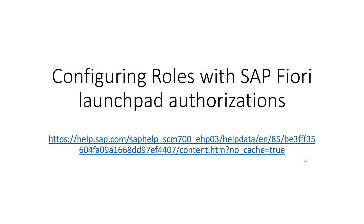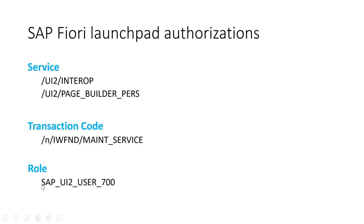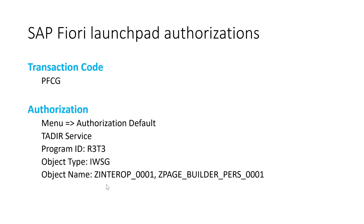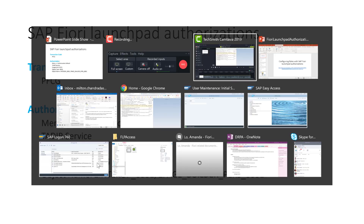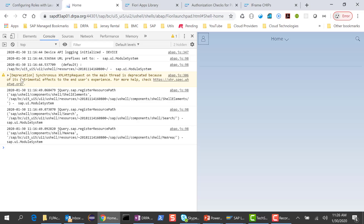Hello everyone. In the previous session, I walked you through the steps of providing the user enough rights to access the Fiori launchpad. Basically, what we did was we copied the role SAPUI2 user 700 and assigned it to the user. In addition to that, we also gave the user rights to interop and page builder purse in IWSG, so the user was able to access the Fiori launchpad.